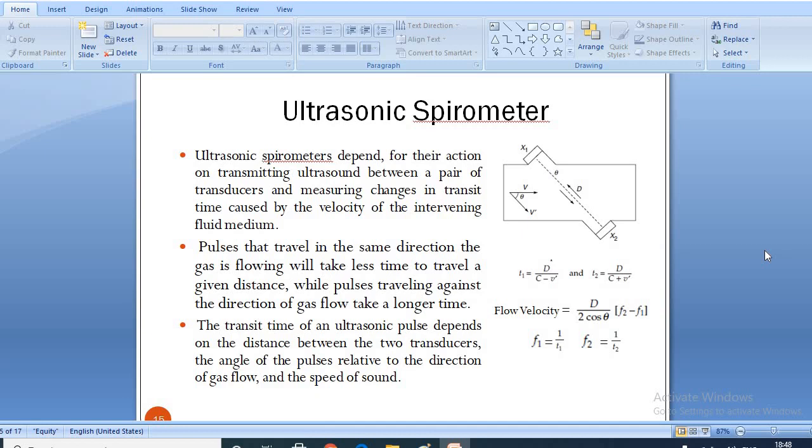The flow velocity is found to be D/(2 cos θ) × (F2 - F1), where F1 = 1/T1 and F2 = 1/T2. The transit time of an ultrasonic pulse depends on the distance between the two transducers, the angle of the pulses relative to the direction of gas flow and the speed of sound.